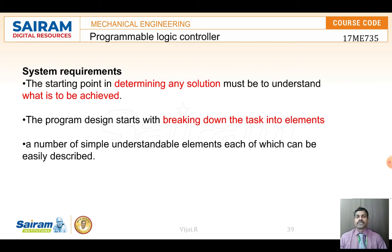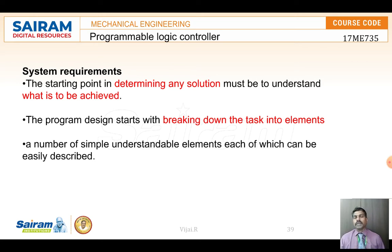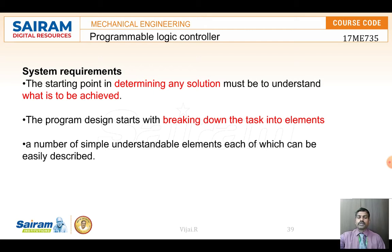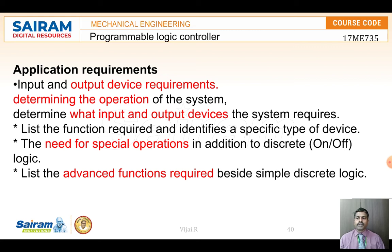Before selecting a PLC, we should know for what purpose we are going to use it — this is called the system requirement. The starting point is determining what solution we want to achieve. We then divide the task into smaller elements, just like an assembly line broken into steps. Dividing into elements makes it easier to describe the process.